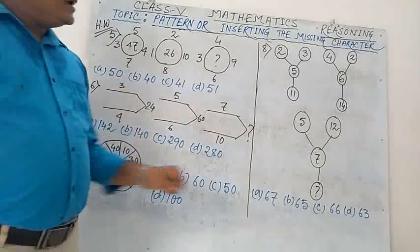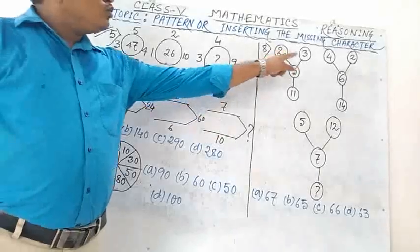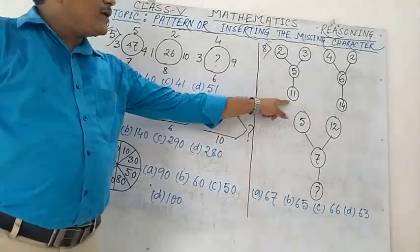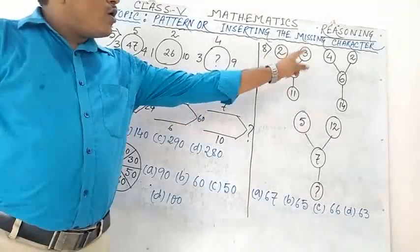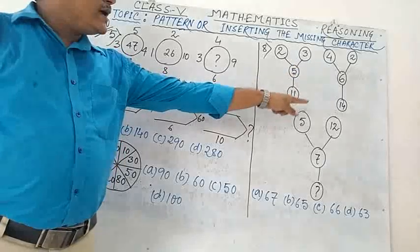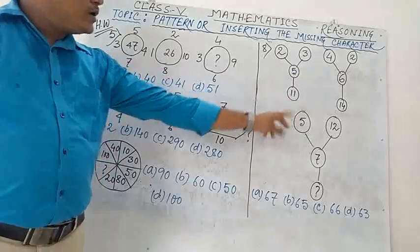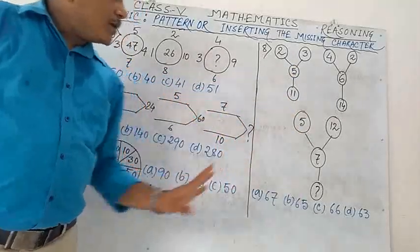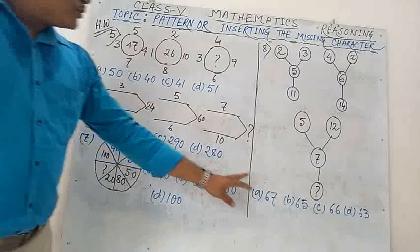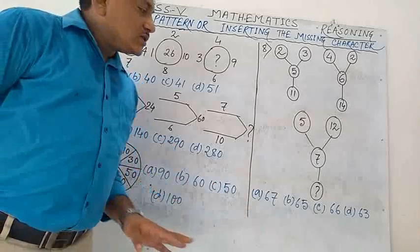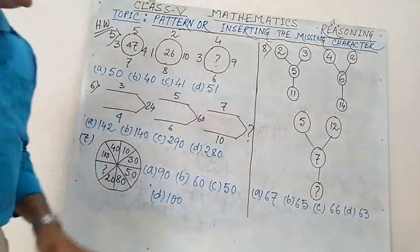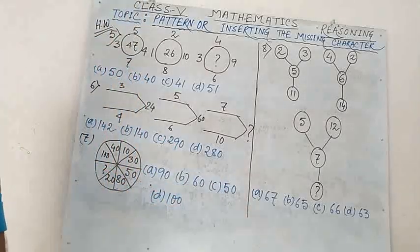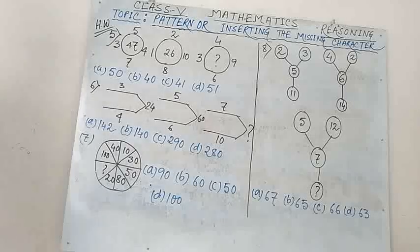Number 8: 2, 3, 5 → 11; 4, 2, 6 → 14; 5, 12, 7 → question mark. Options: A) 67, B) 65, C) 66, D) 63.